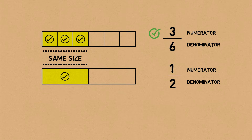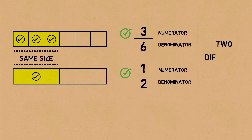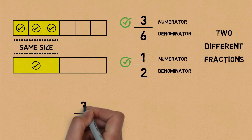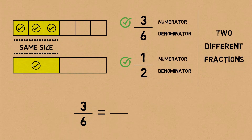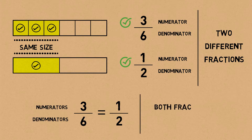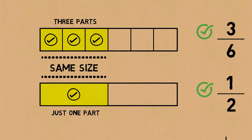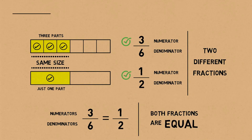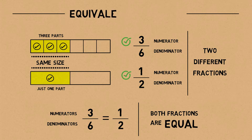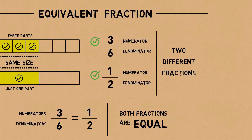So do you see, even though it's the same size that is shaded, we've got two different fractions. But in reality, both of these fractions, even though the denominators and numerators are different, are equal to each other. The only difference is that the parts have been split up into more parts, or the parts have been stuck together as one part. That is what we mean by equivalent fractions.